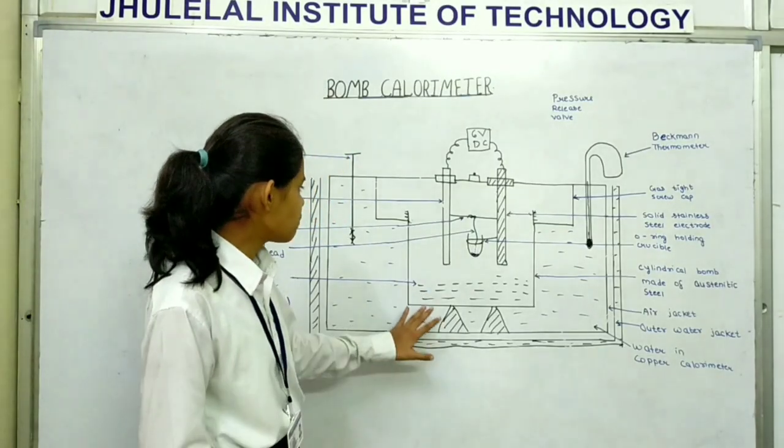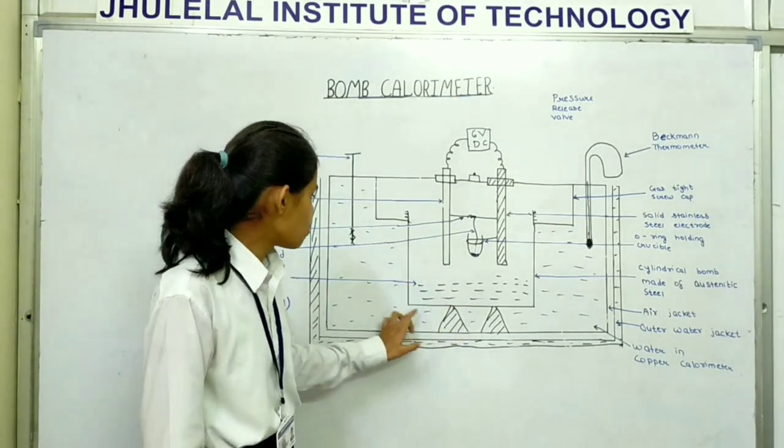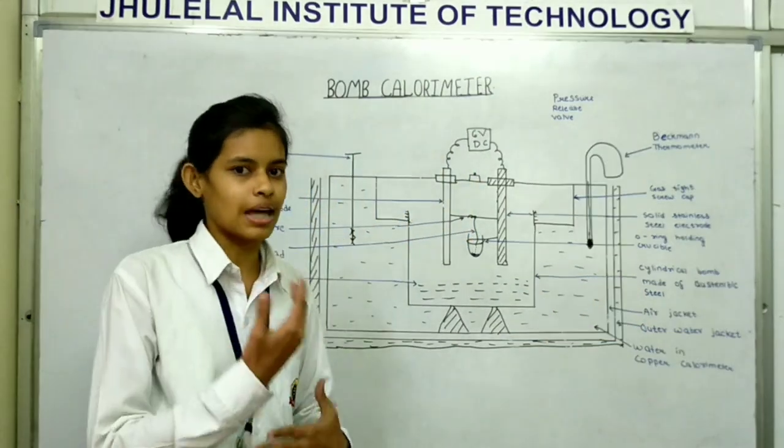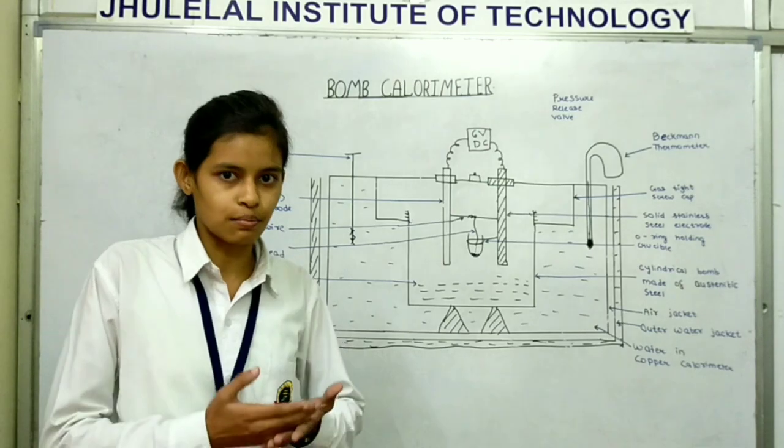See the construction. Here, we have the strong cylindrical bomb which is made up of stainless steel and can withstand high pressure of 50 atmospheres. The bomb has two gas tight screw cap and the pressure release valve.